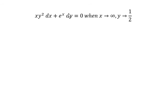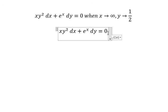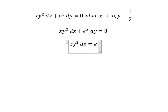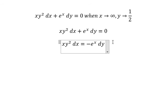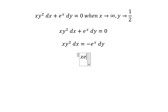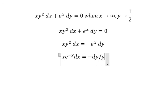We put this one on the right and we get negative e to the power of s dy. We divide both sides by e to the power of s and put y to the power of 2 on the right. We get e to the power of negative s dx equals negative dy over y squared.